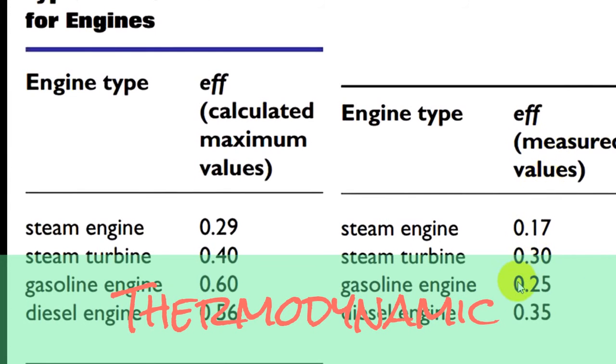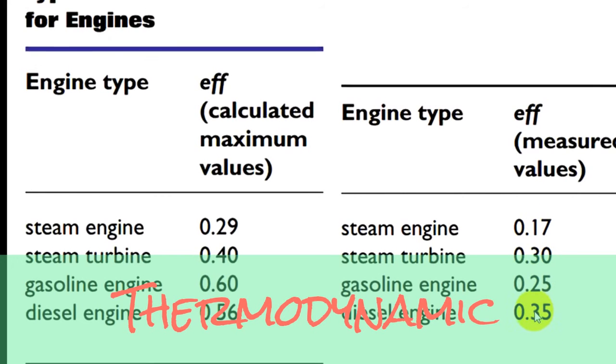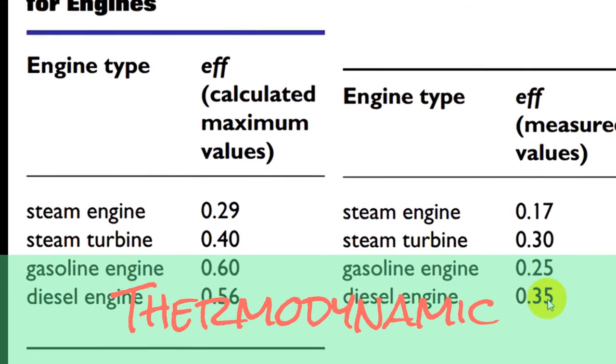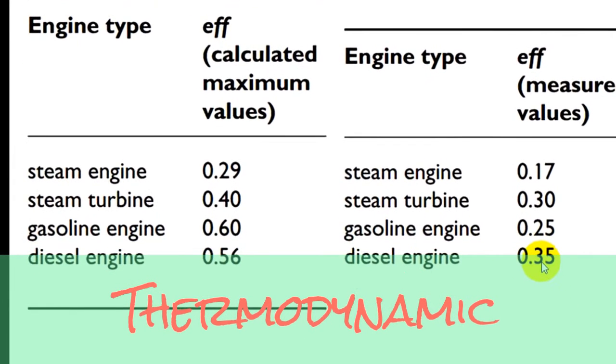So back to these values. Measured values are much lower. For a gasoline engine, 25% efficiency. Steam engines, only 17%. Diesel engines are more efficient, as you can see here. We have some advantages that we can talk about in class.